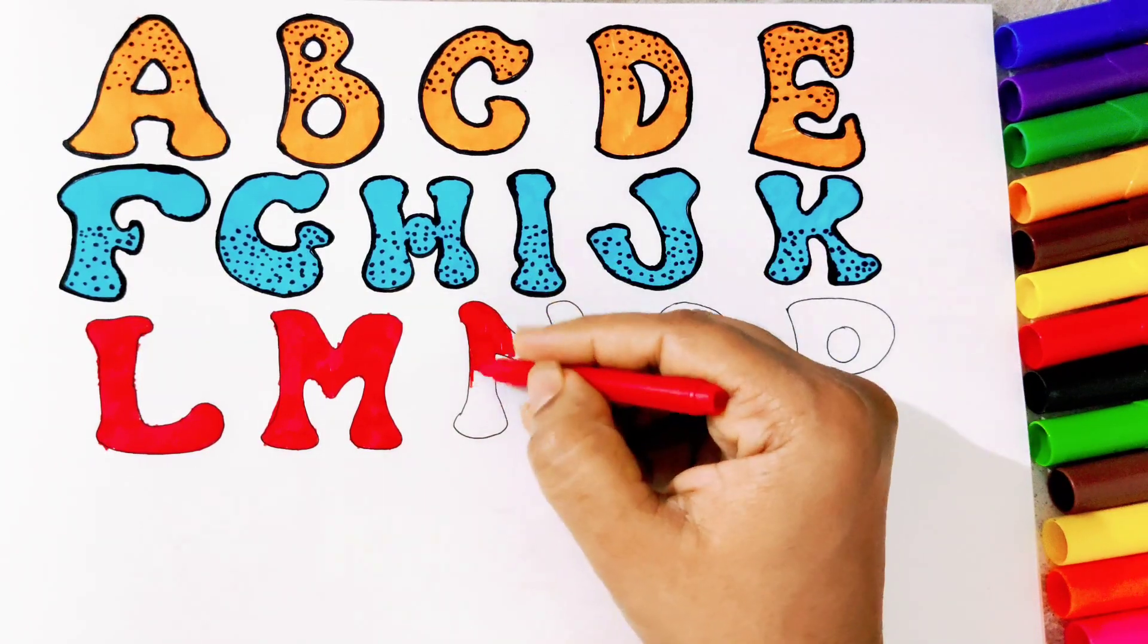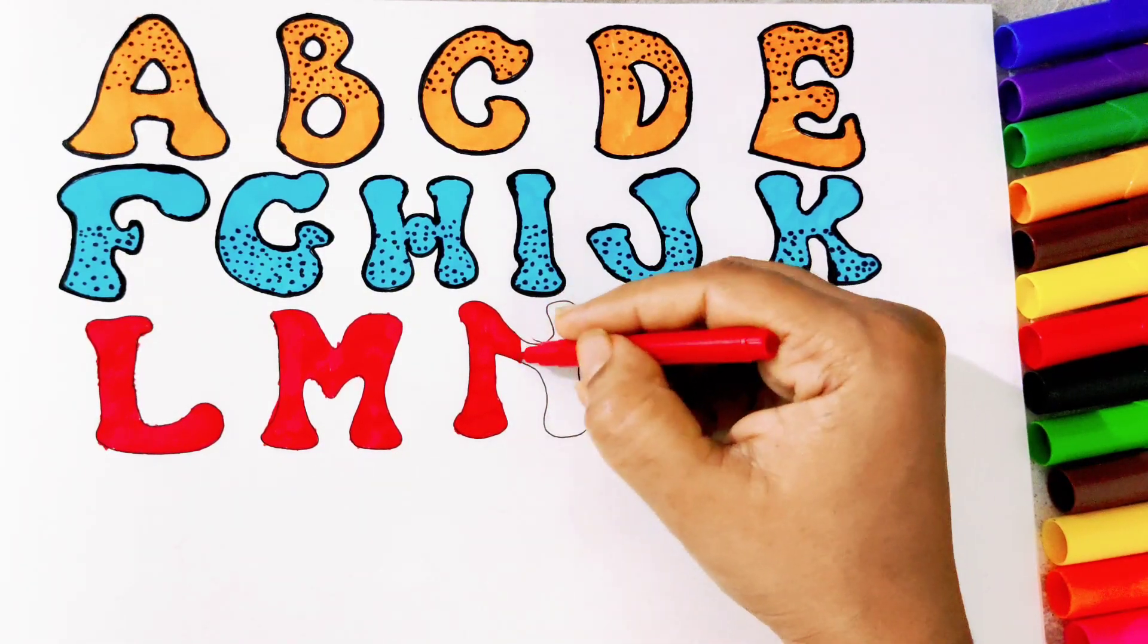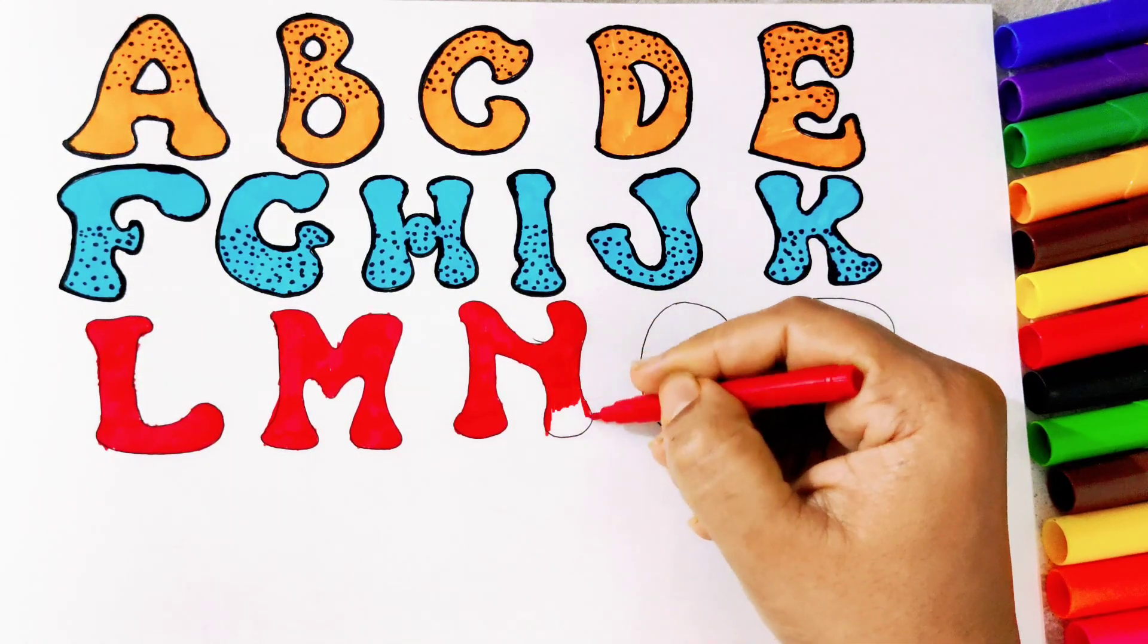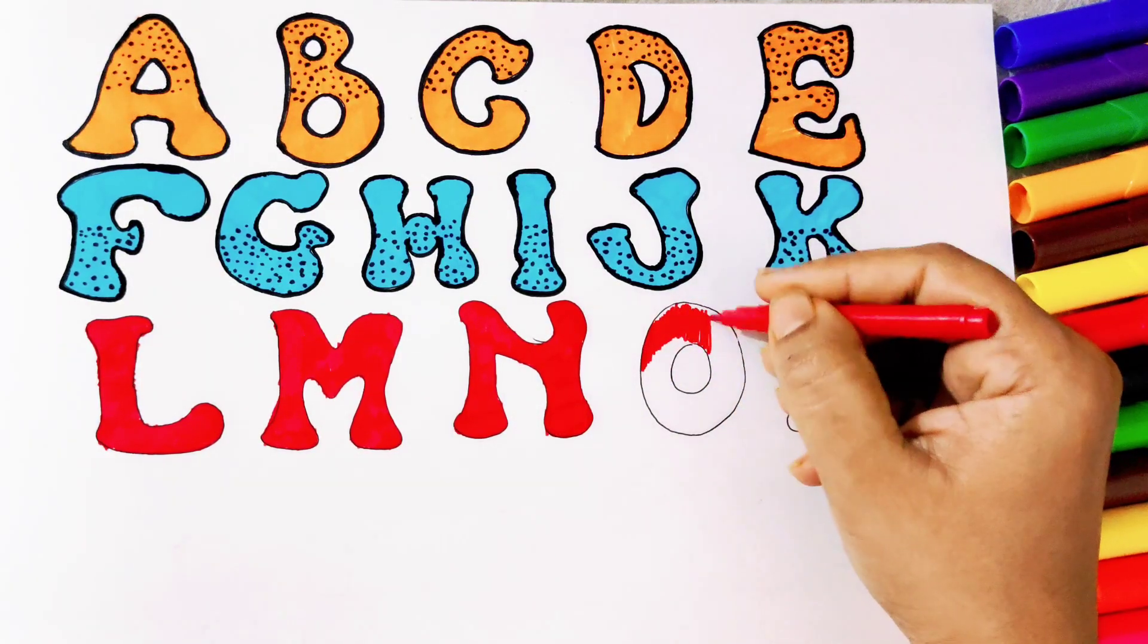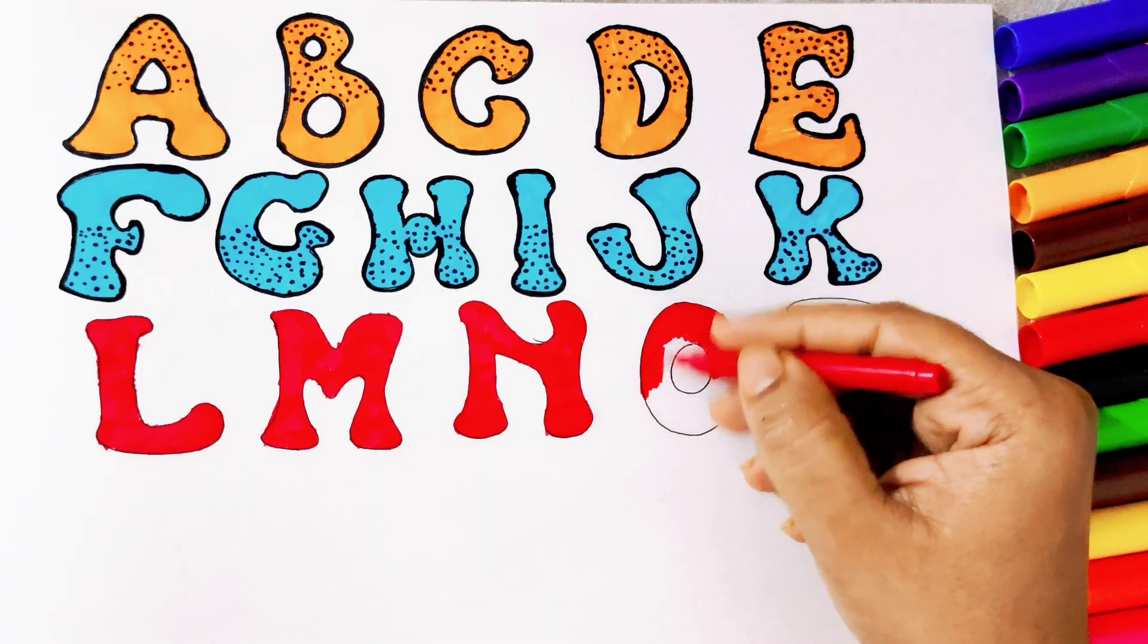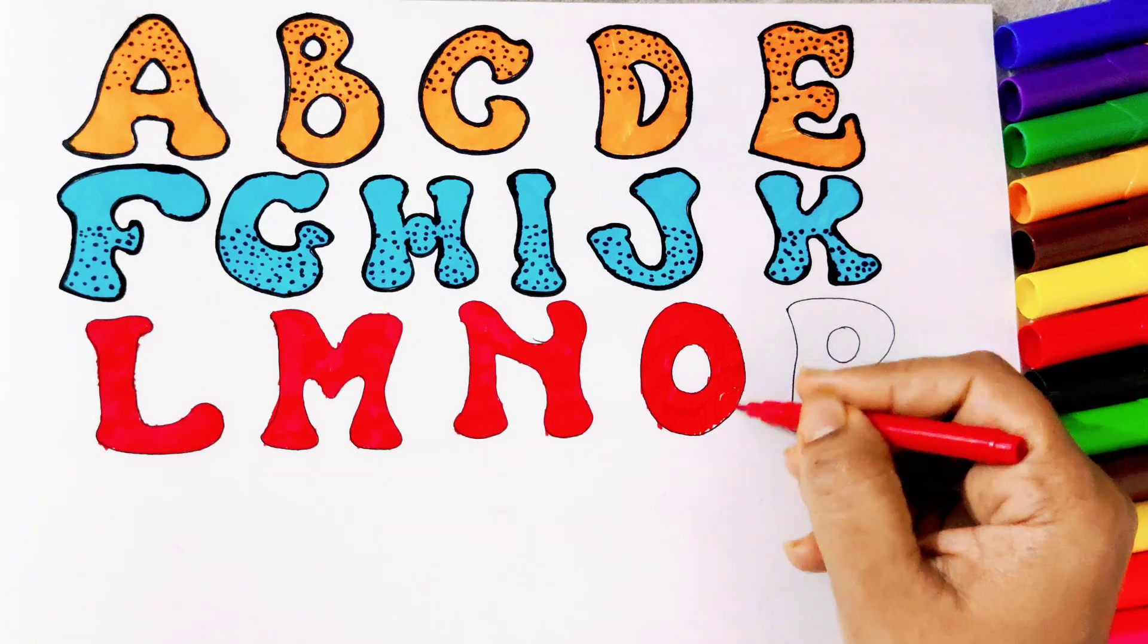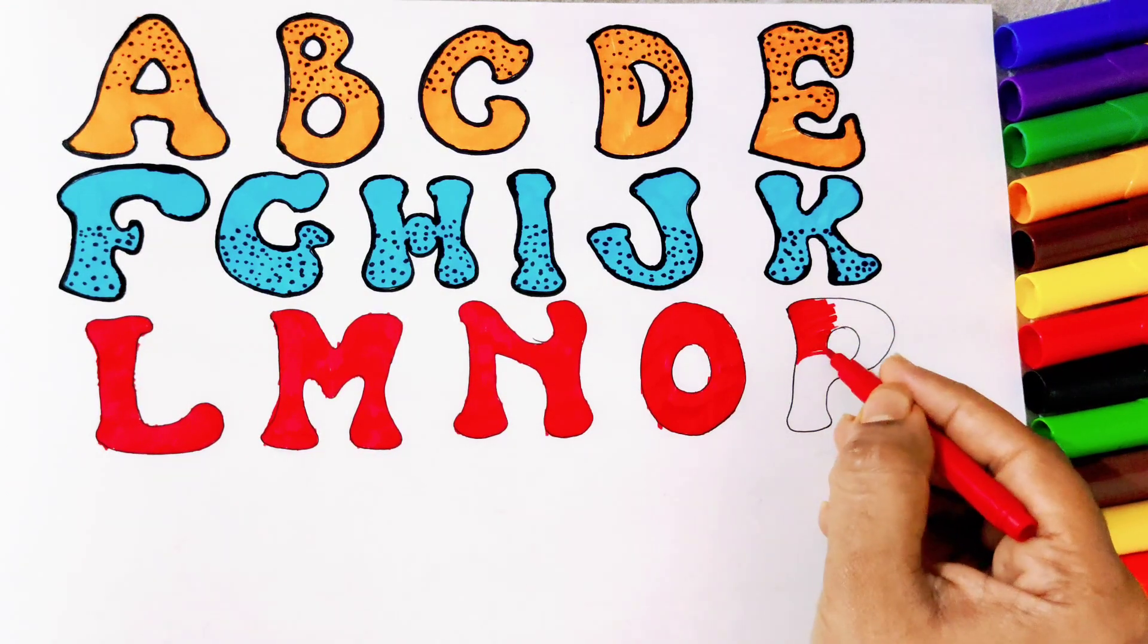N for nose. These letters in red color are very attractive friends. You also try at home. Sketch these alphabets in different patterns as you like. Now we are filling red color in O. O for orange. P for parrot.